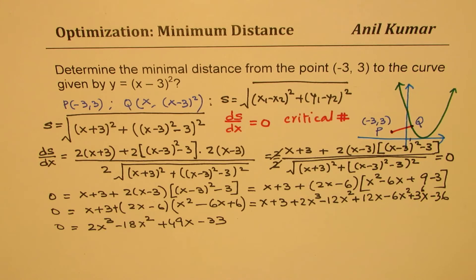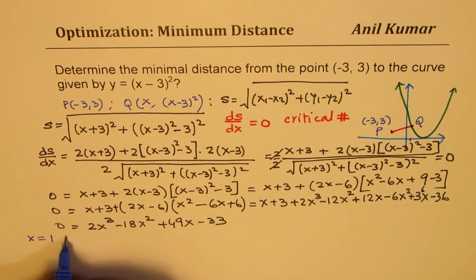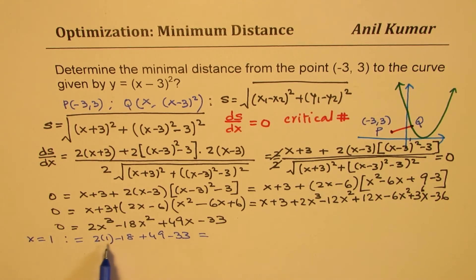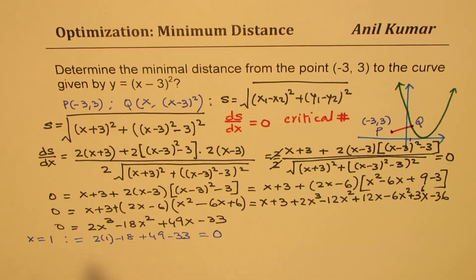To factor this, we test x equals 1: substituting gives 2(1) minus 18 plus 49 minus 33, which equals 2 minus 18 plus 49 minus 33. That simplifies to minus 16 plus 49 minus 33 equals 0. So x equals 1 is a critical number.